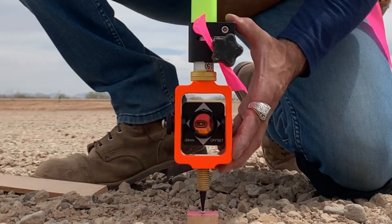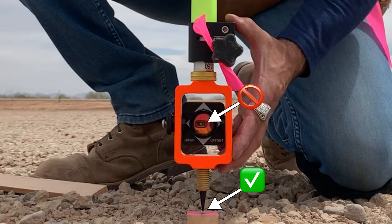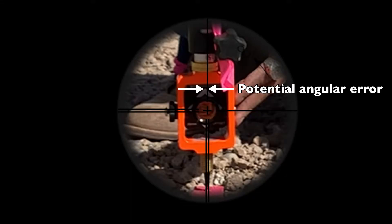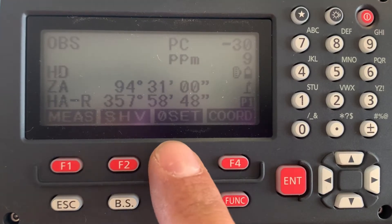That means we're always measuring our angle from the object of reference itself, not from the prism center, avoiding any potential error left or right due to prism rotation or the rod being out of plumb. Let's go ahead and set zero and get started.